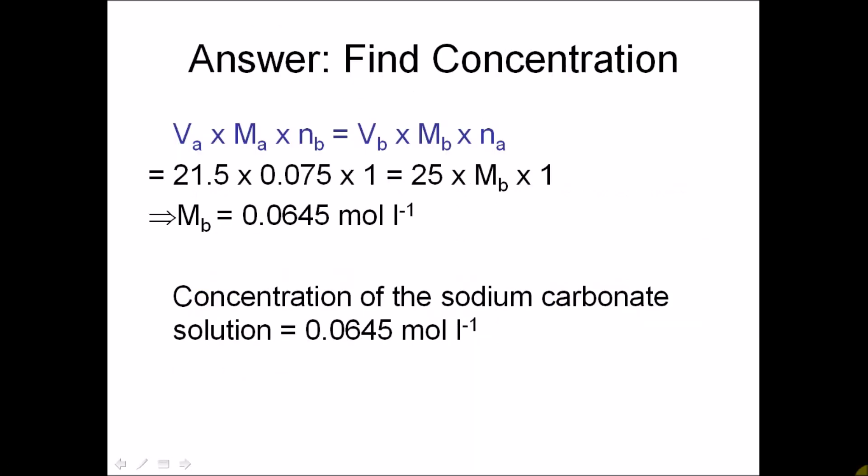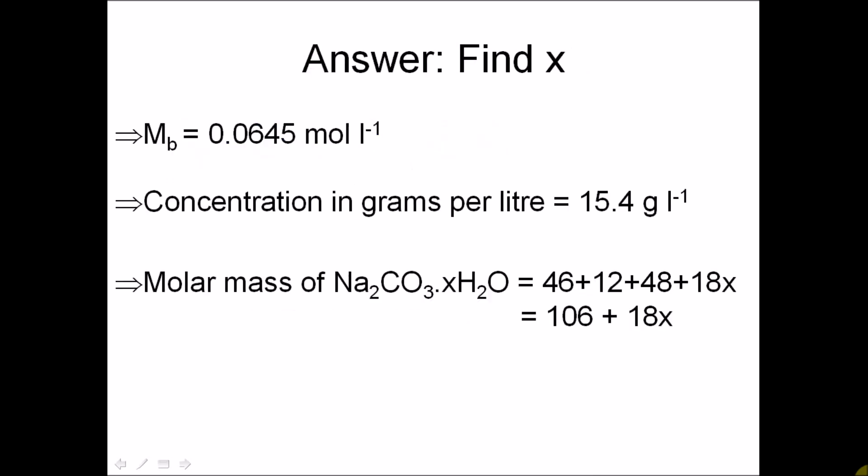X represents the molecules of water of crystallization in hydrated sodium carbonate. Here's how you solve it. The formula you use is: Va × Ma × Nb = Vb × Mb × Na, where A represents acid, B represents base, V is the volume, M is the molarity, and N is the number of moles in the balanced equation. After substituting all known values into this formula, you should get the molarity of sodium carbonate to be 0.0645 moles per litre. We also know its concentration in grams per litre — since 15.4 grams of solute was dissolved and made up to 1 litre, that's 15.4 grams per litre.